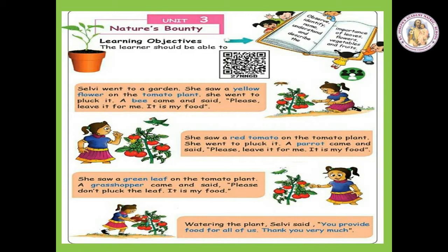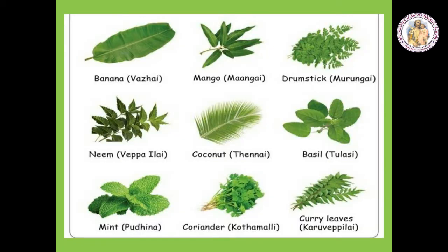It is my food. She saw a green leaf on the tomato plant. A grasshopper came and said, please don't pluck the leaf. It is my food. Watering the plant, Selvi said, you provide food for all of us. Thank you very much. Yes children, do you enjoy the story? As Selvi said, all the living things get food from plants. Now we are going to learn some of the leaf names.